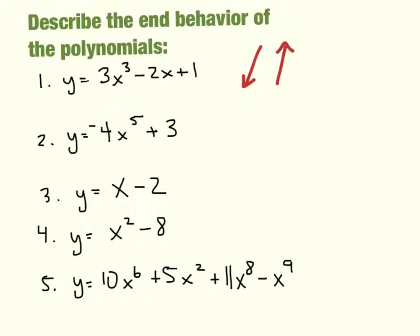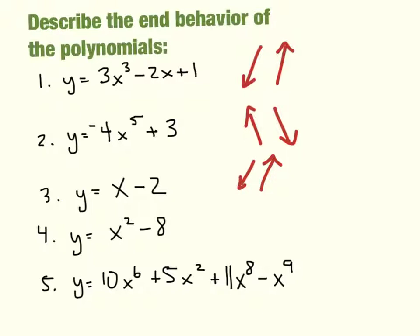In the second example: negative 4x to the fifth plus 3. My leading coefficient is negative, so I know it ends going down. And since it's an odd degree — 5 — they go in opposite directions, so it started going up. Next: y equals x minus 2. That's a positive x, so I know it's going to end going up. The degree of the polynomial is 1 — x to the first power — so it must start by going down and come up.